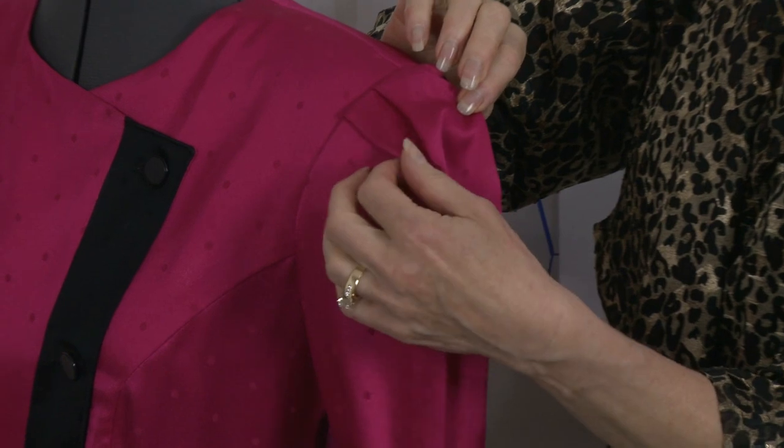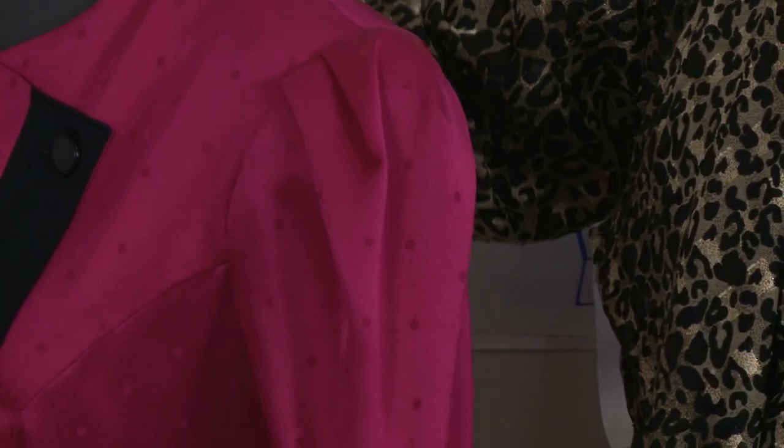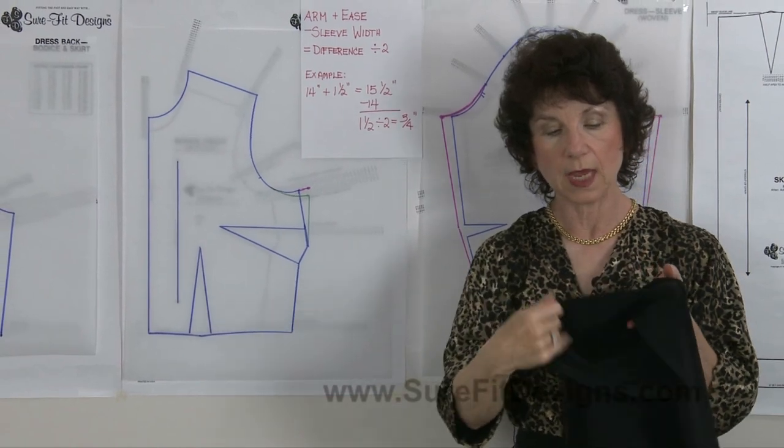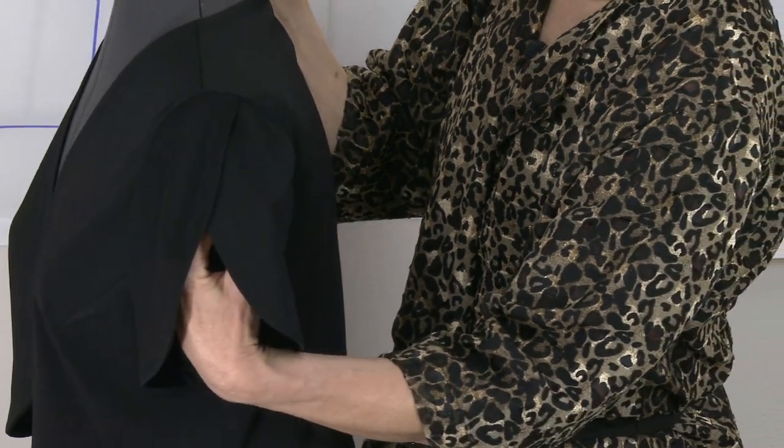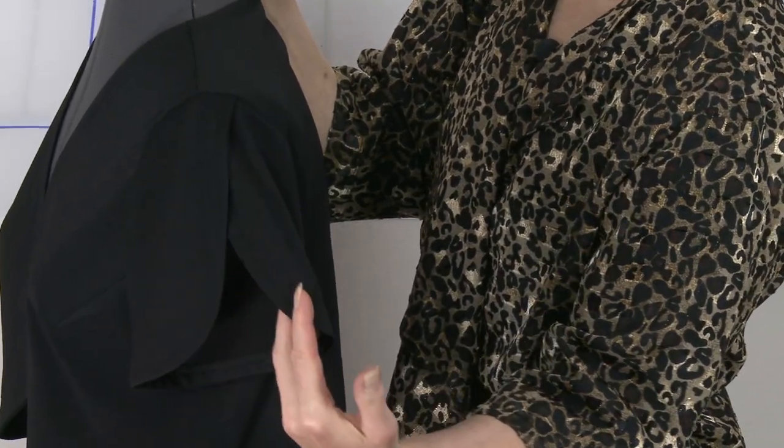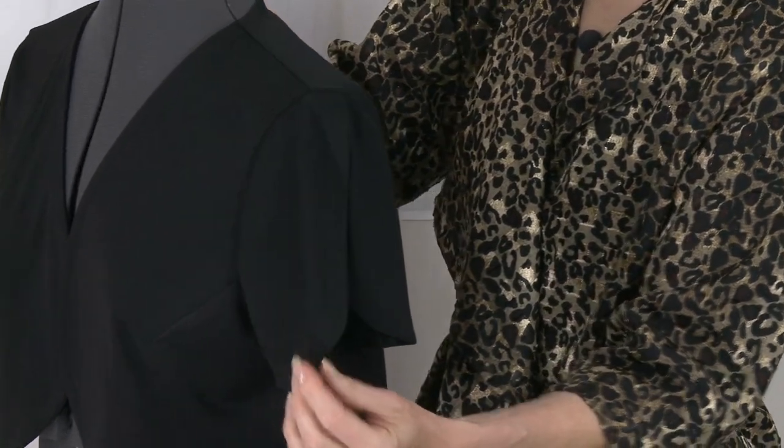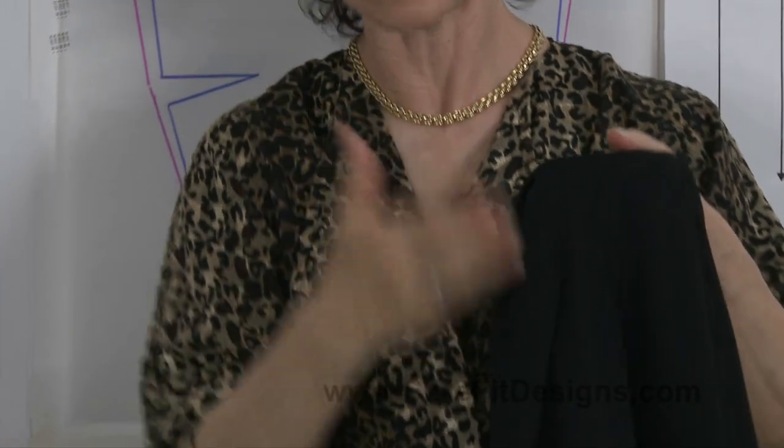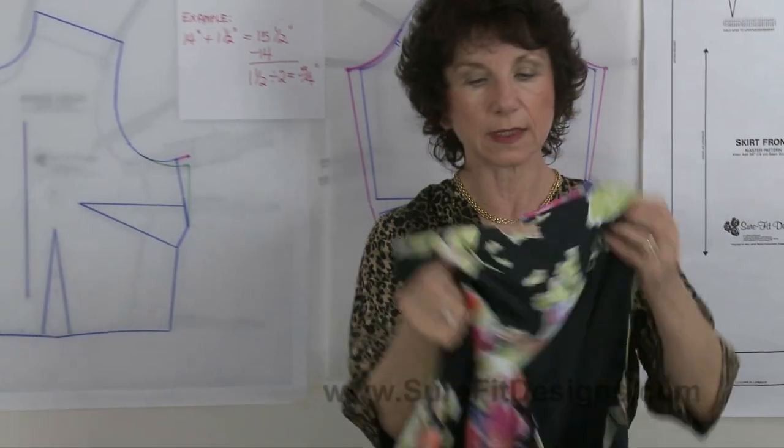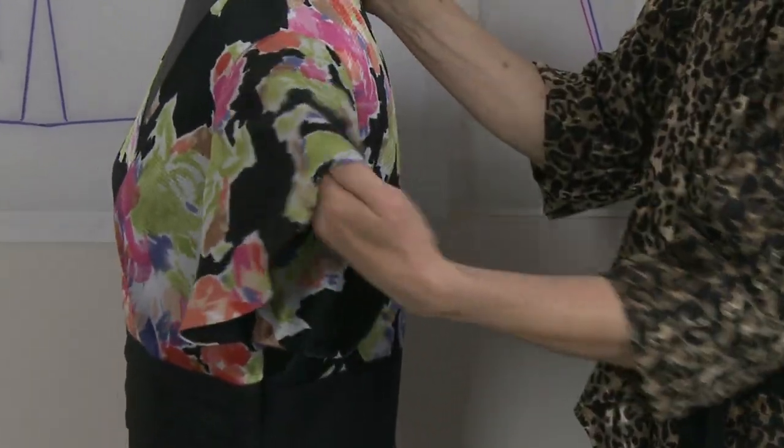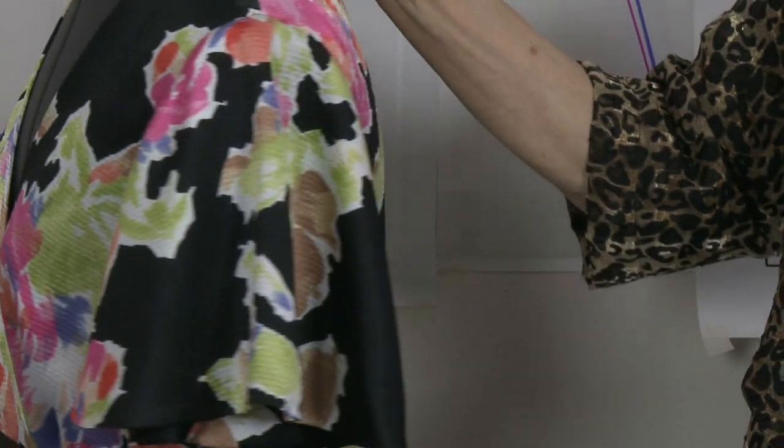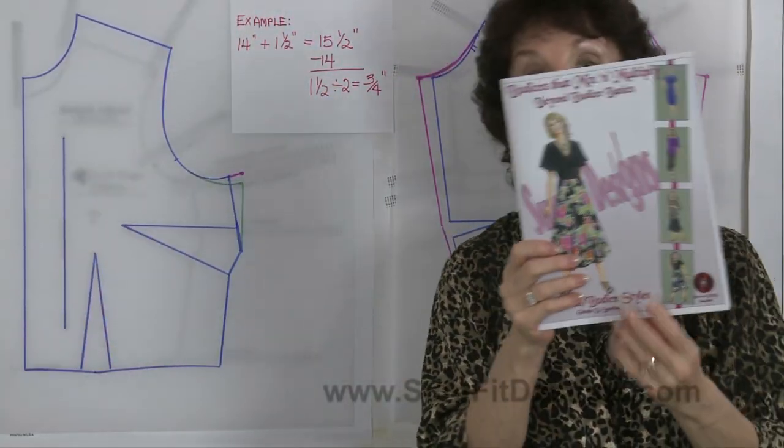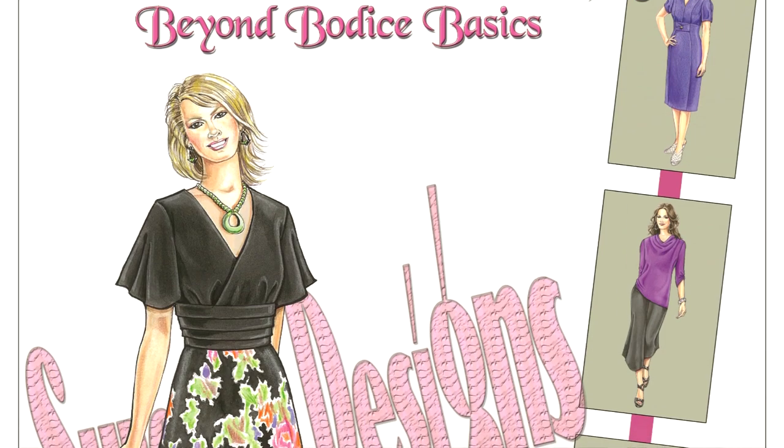Another thing that you can do is do this really pretty little petal or tulip sleeve, and it can be made as long as you want it to where the sleeve opens up from the cap down. And that's actually an excellent one for the large upper arm. Another sleeve you could do is a flounce style of sleeve, and this is incredibly pretty. It's a very lovely design. Both of those sleeve designs are found in the newest design book called Beyond Bodice Basics.